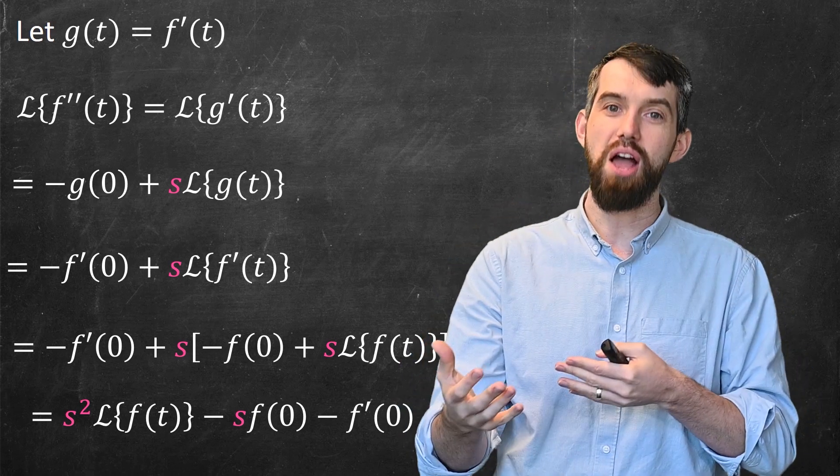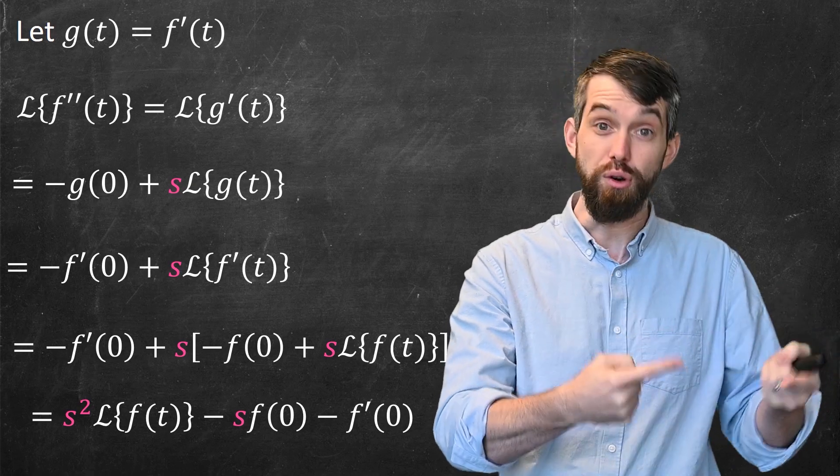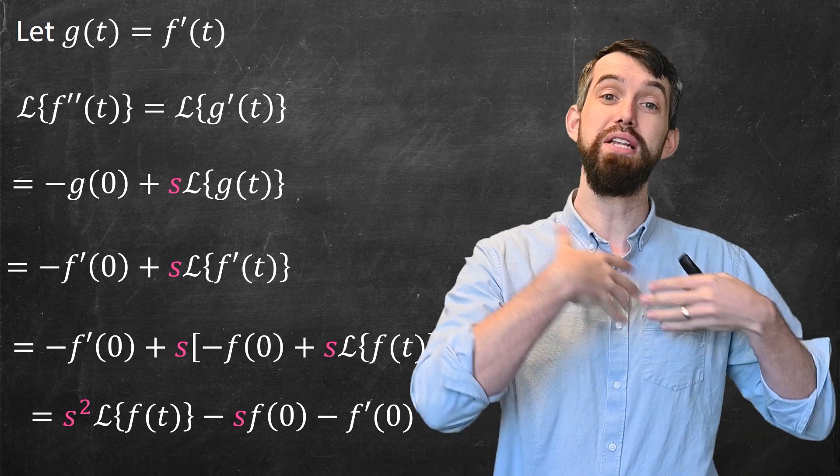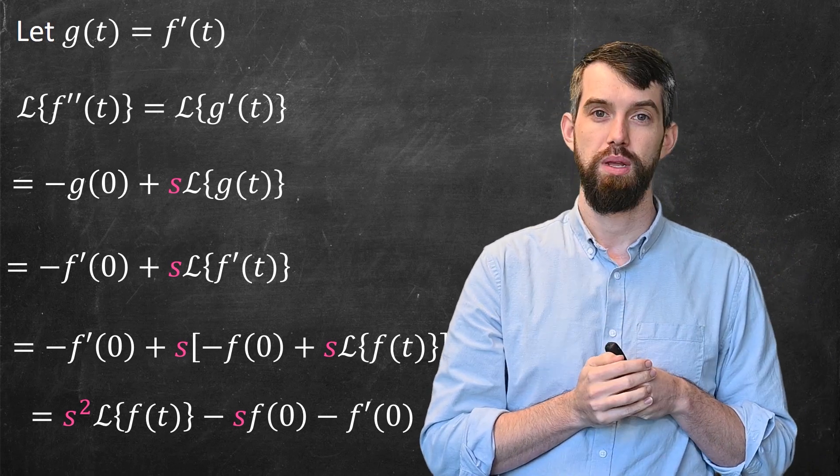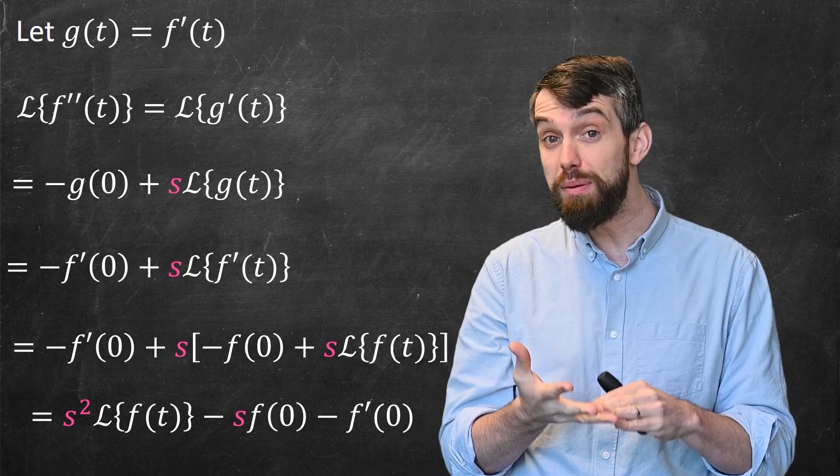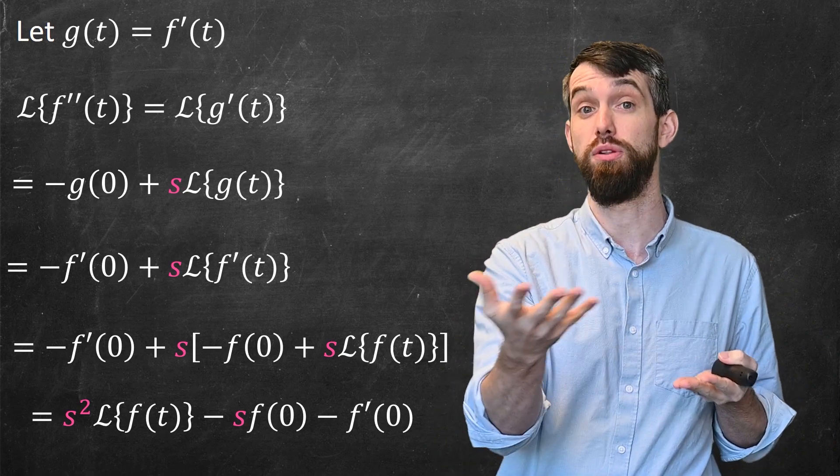So for the second time, we've seen how taking the Laplace transform of either a first or a second derivative transforms it into an expression that doesn't have any derivatives in it. Here I'm thinking of f(0) and f'(0) just being two constants that in general you'll get from the initial conditions.